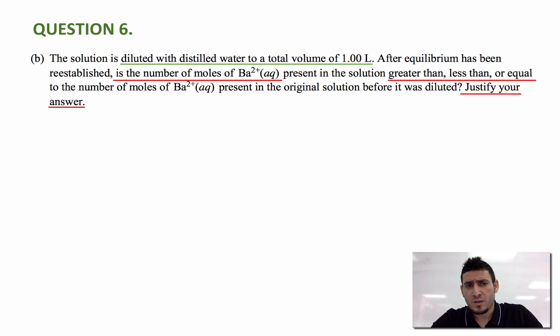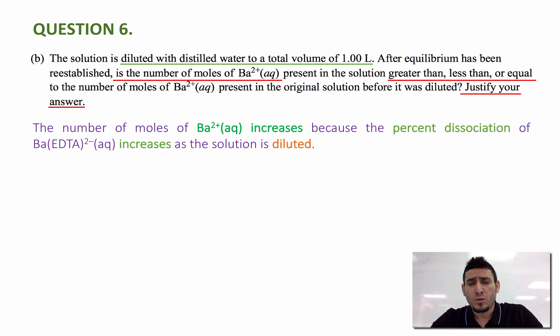Now we can answer this question in two different ways. We can either say, the number of mole of Ba 2+ will increase because the percent dissociation of the complex ion will be higher as the solution is diluted. Or we can just use the reaction quotient, Q.